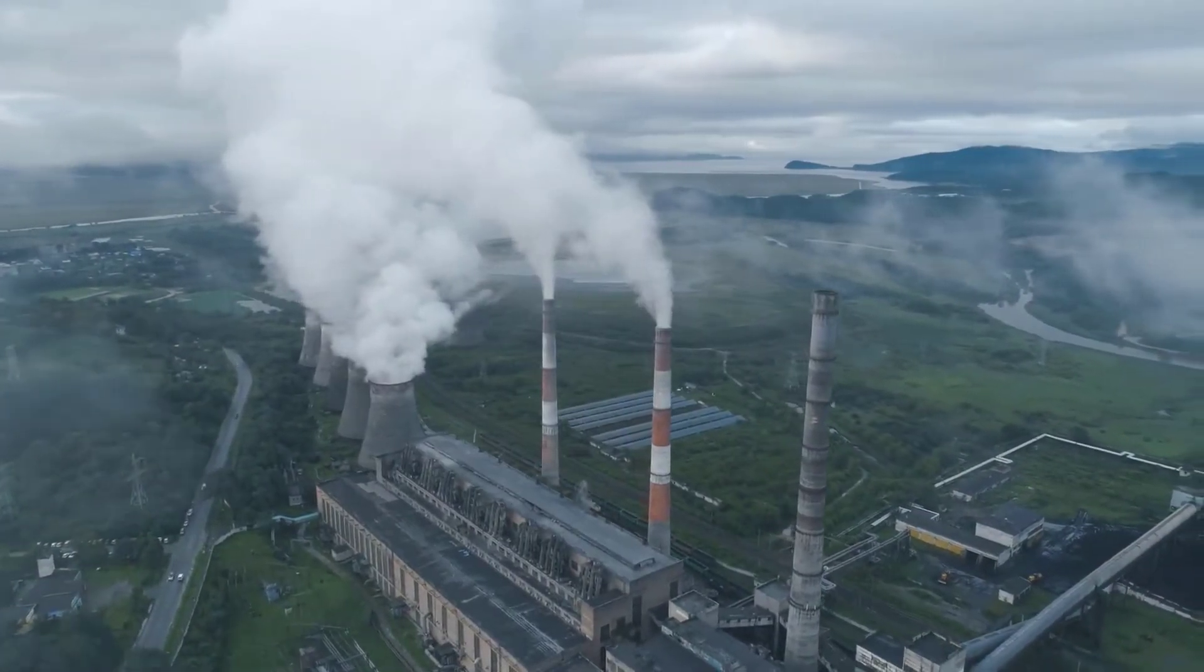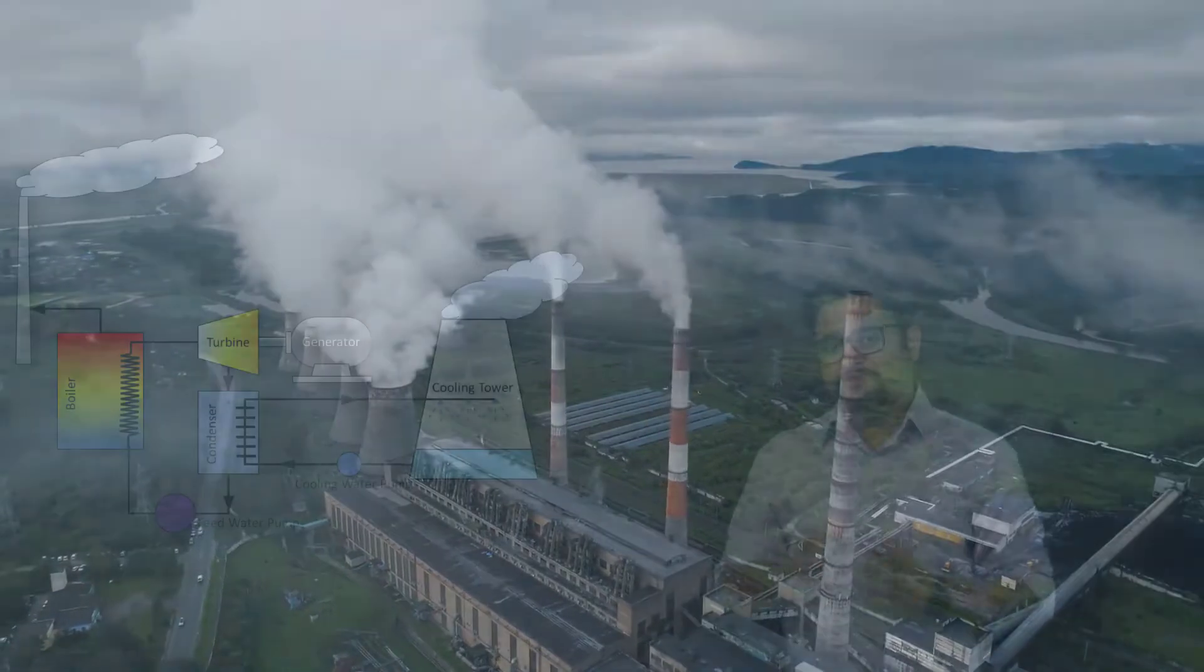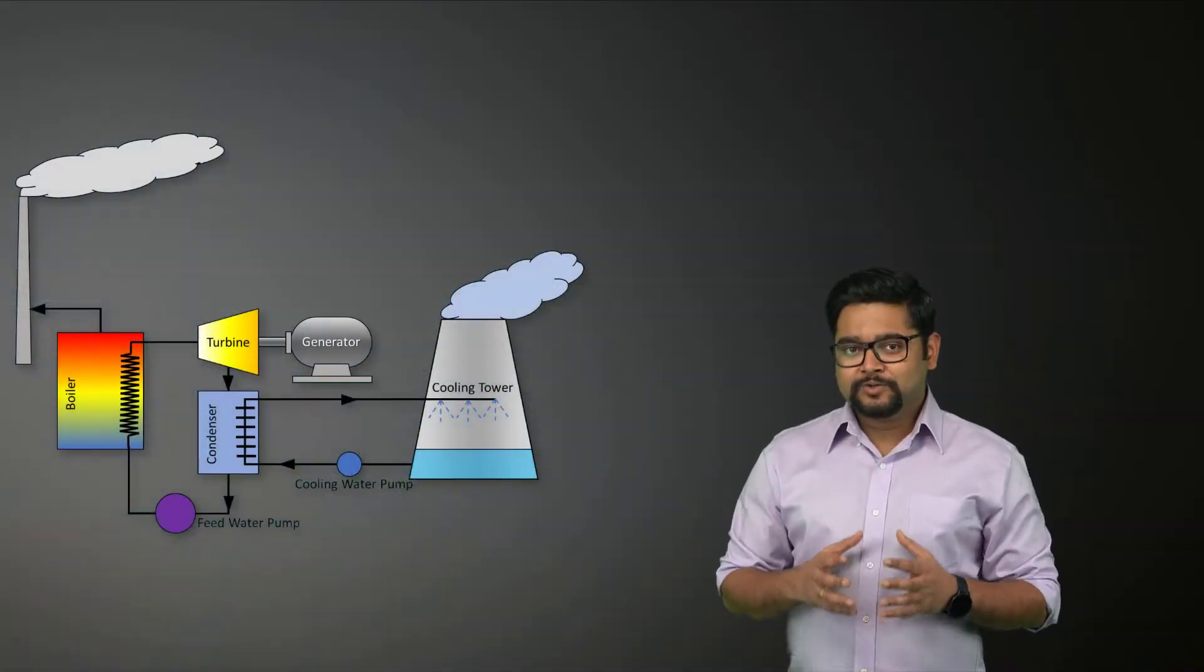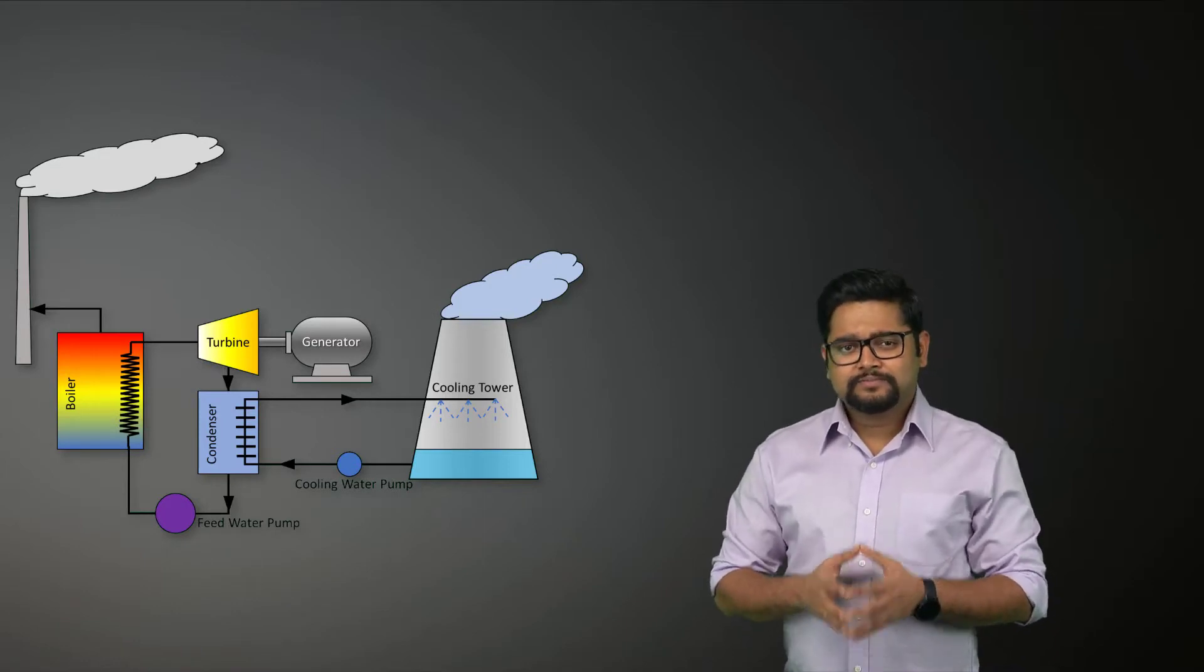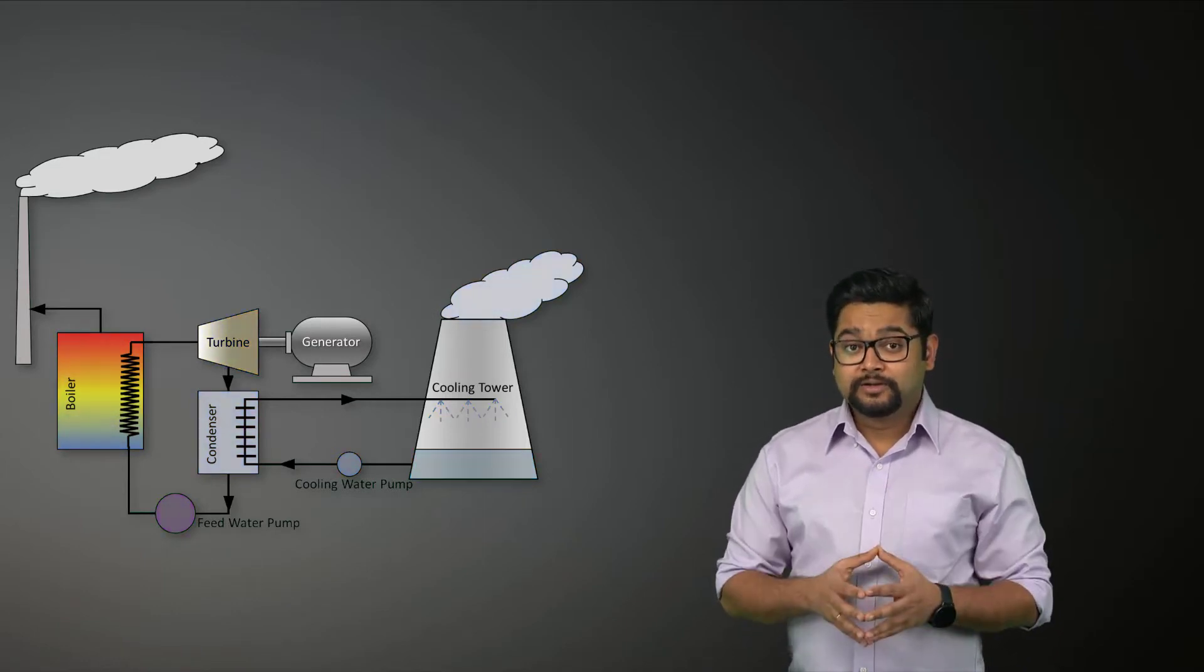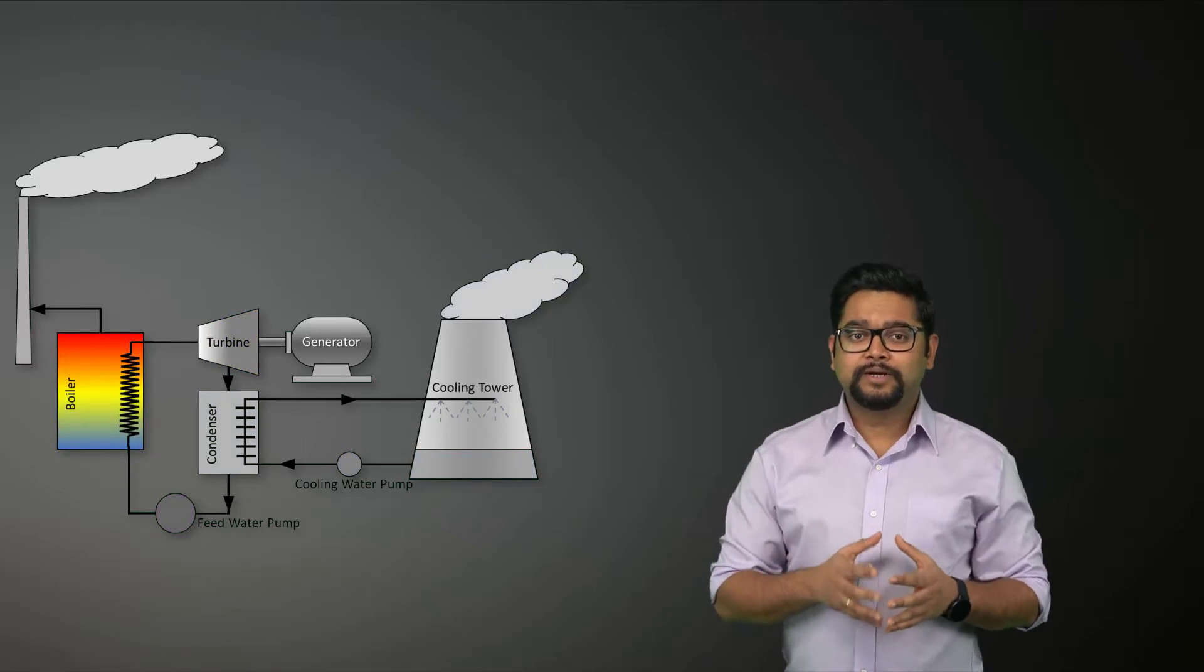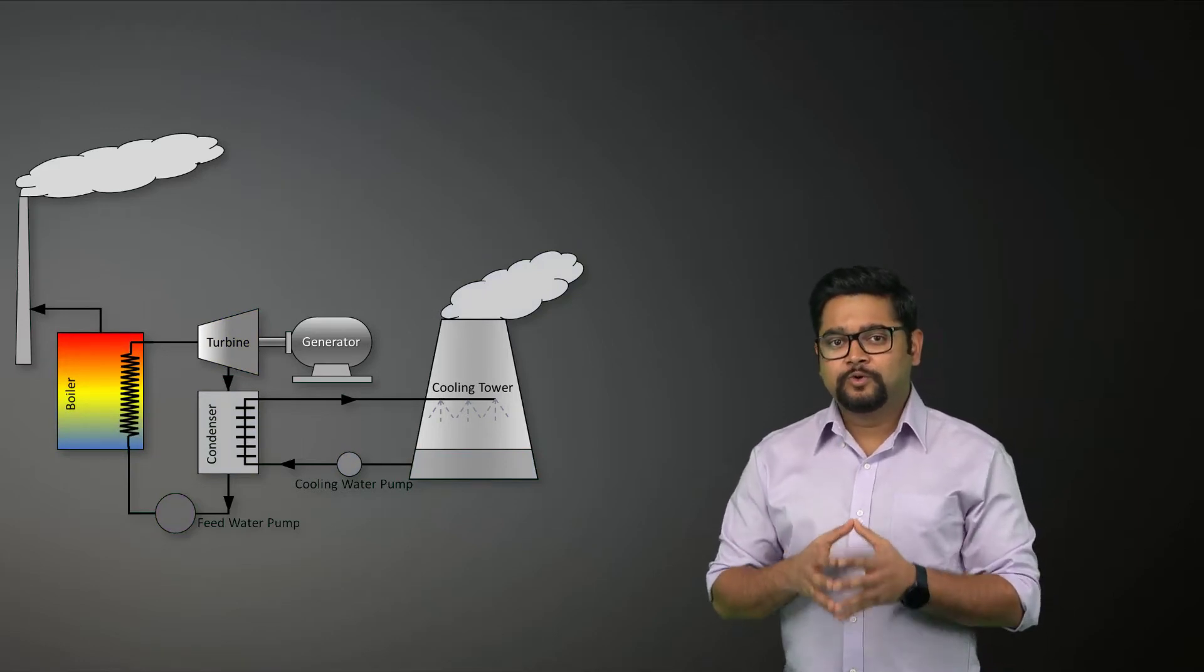Consider a steam power plant. The feed water must be converted to steam before it can turn turbine and generate power. This is usually done in a boiler where the heat from the hot burning gases is transferred to the water.